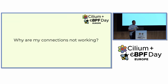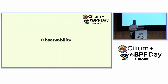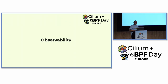But sometimes a connection between two applications doesn't work at all, and you ask: 'Why are my connections not working?' The answer is Hubble Observe. Hubble is a great observability tool for debugging your application's networking, and you can see very easily what is actually blocking your connections.